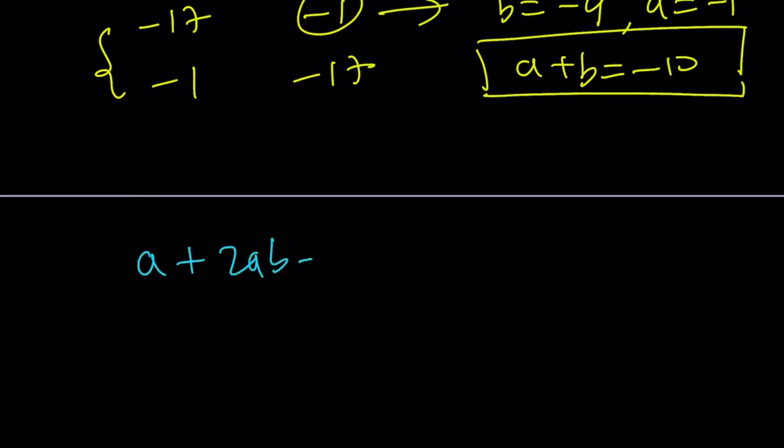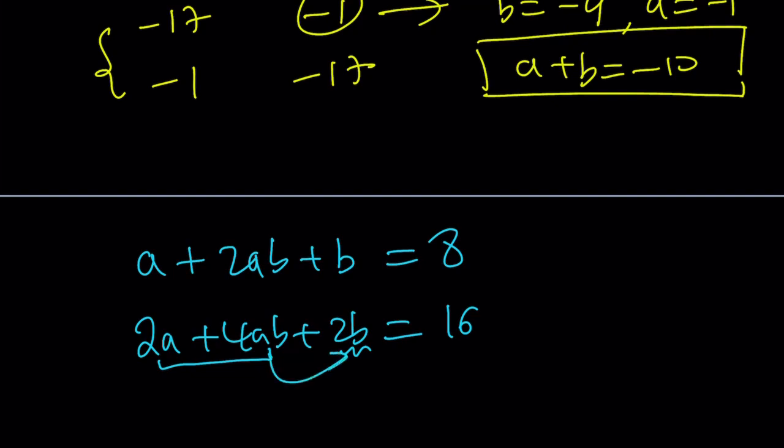So instead of dealing with fractions here, because we kind of had to take out a 2a and then we had to deal with fractions, you could also do the following. You could multiply both sides by 2. That would give you 2a plus 4ab plus 2b equals 16. And then what you can do is, since your goal is to get a common factor, notice that if I divide 4ab by 2b, by this, then I should be getting 2a. And 2a is right here.